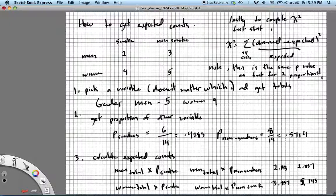So then to get the expected count, all we're going to do is we just multiply the total men by the proportion of people in our sample who smoked. So that will give us the expected count for this cell, and a lot of the time you'll be told to just take the row total times the column total and divide by n.